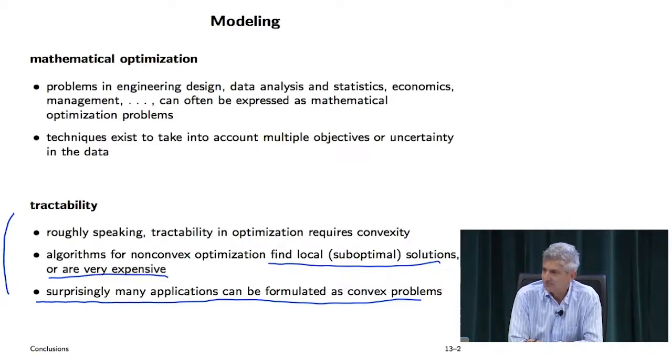A long time ago I used to give a talk on control, showing problems that could be reduced to convex problems, and I thought I should show one that cannot be. So I showed one I thought couldn't — it involved finding a Lyapunov function and a state feedback gain at the same time. I gave a very good argument: they get multiplied together, and that's never good for convexity.